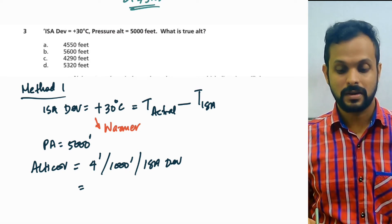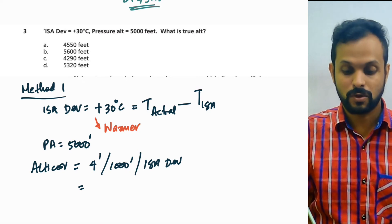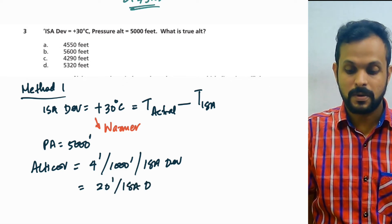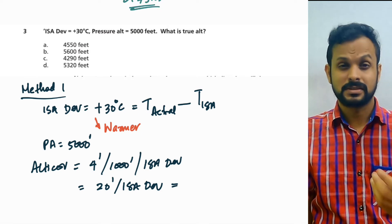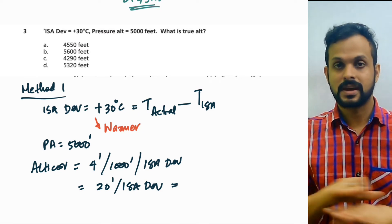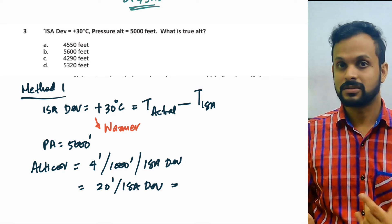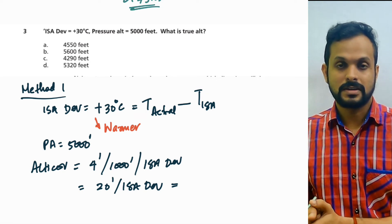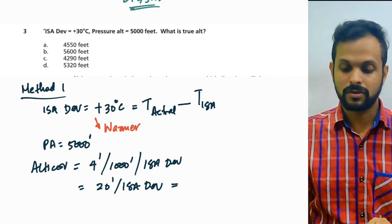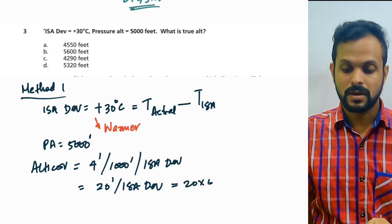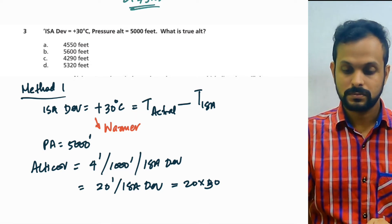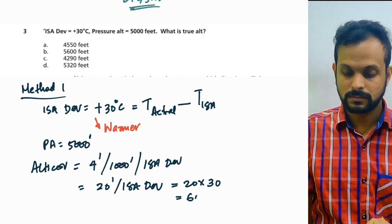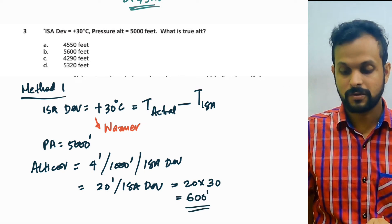Your pressure altitude is 5000 feet. At 4 feet per 1000 feet, for 5000 feet that gives 20 feet — and that is per degree Celsius of ISA deviation. We have plus 30 degrees Celsius of ISA deviation; remember, the sign doesn't really matter here, the value 30 is what's significant. So 20 feet of altitude correction for every degree Celsius of ISA deviation — for 30 degrees Celsius it's 20 multiplied by 30, which is 600 feet.